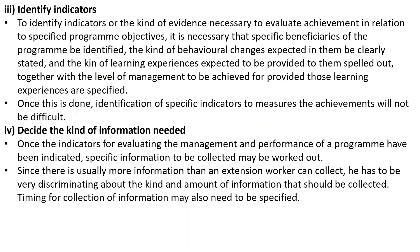Third, identify the indicators. To understand whether an objective has been achieved, we look at indicators. For example, if the first objective is to educate farmers about new technology, the indicator would be whether the farmer has implemented that technology on his farm. Such indicators need to be identified before the evaluation starts, as every objective is assessed through its indicators.